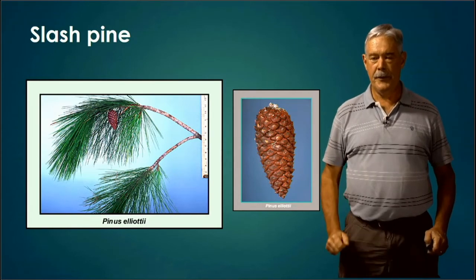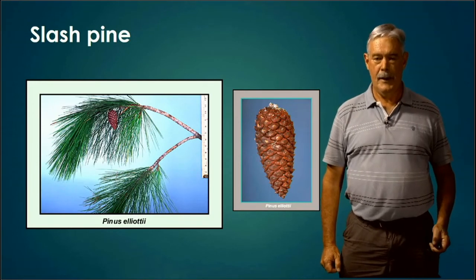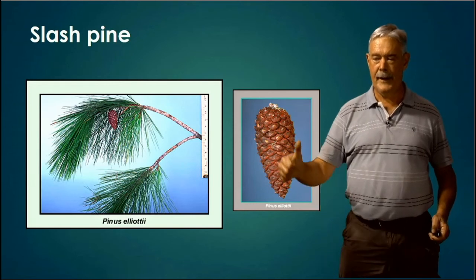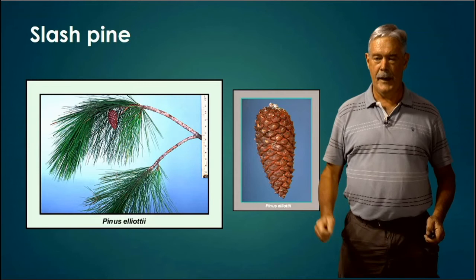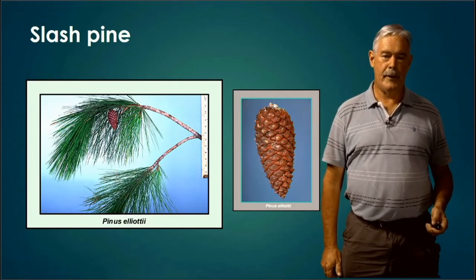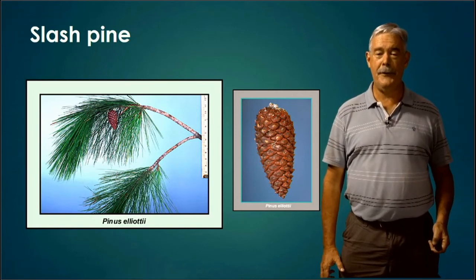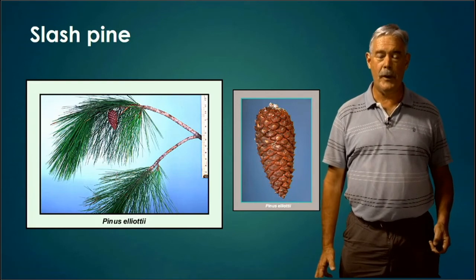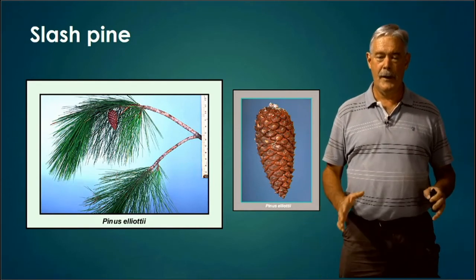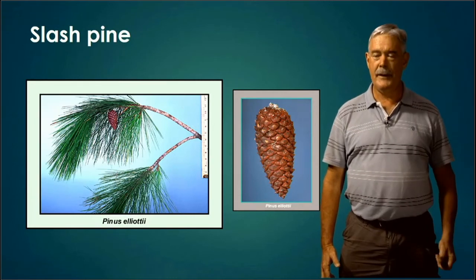One of my favorite diagnostic features for pines is the twig diameter. Slash pine's twig is about the size of a man's pointer finger or pinky. Loblolly pine has three-needle bundles and a twig skinnier than a soda straw — really skinny. Longleaf pine has a twig the size of a man's thumb. You can see that from way up in the tree, making it a good way to tell the pines apart from a distance. You're also allowed to pick up needles from underneath the tree to examine them.